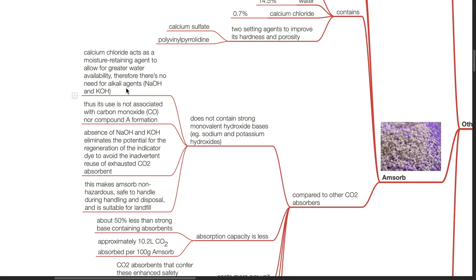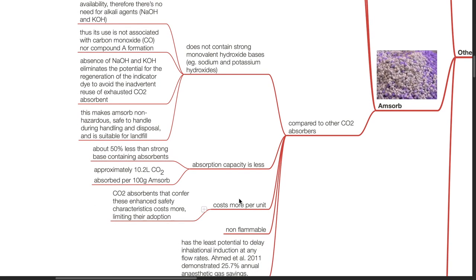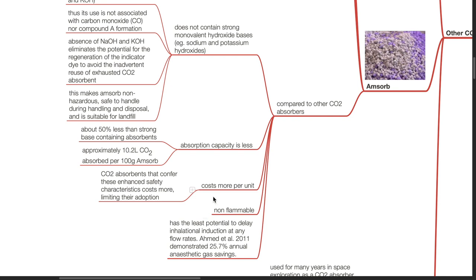Thus, its use is not associated with carbon monoxide or compound A formation. Absence of NaOH and KOH eliminates the potential for regeneration of the indicator dye, to avoid inadvertent reuse of exhausted CO2 absorbent. This makes Amsorb non-hazardous, safe to handle during handling and disposal, and suitable for landfill. Absorption capacity of Amsorb is less — about 50% less than strong base-containing absorbents — approximately 10.2 litres of CO2 absorbed per 100g. Amsorb costs more per unit, limiting its adoption in routine use. Amsorb is non-flammable and has the least potential to delay inhalational induction at any flow rates.